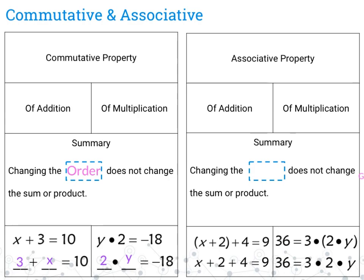The associative property applies to both addition and multiplication. The summary says that changing the grouping does not change the sum or the product. For example, x plus 2 inside parentheses plus 4 on the outside — if I change the grouping to be around the 2 and the 4 instead, it gives the same result. On the multiplication side, I've got parentheses around 2 and y, and if I shift the grouping to be around the 3 and the 2, the answer will end up being the same.